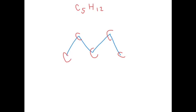That's because you have five carbons in pentane. So you should have one, two, three, four, five carbons — or five points — in your skeletal structure.